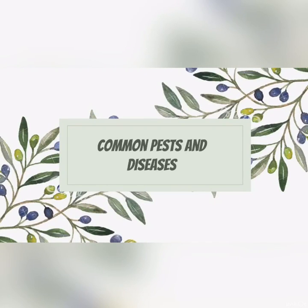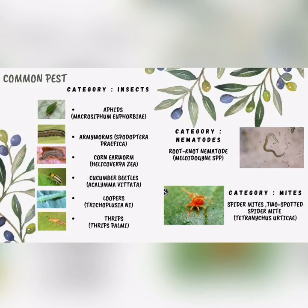Now let's talk about the common pests and diseases. For common pests, the category of insects includes aphids, armyworms, corn earworms, cucumber beetles, loopers, and thrips. For the category of nematodes, also known as root-knot nematode. And the category for mites includes spider mite and two-spotted spider mite.